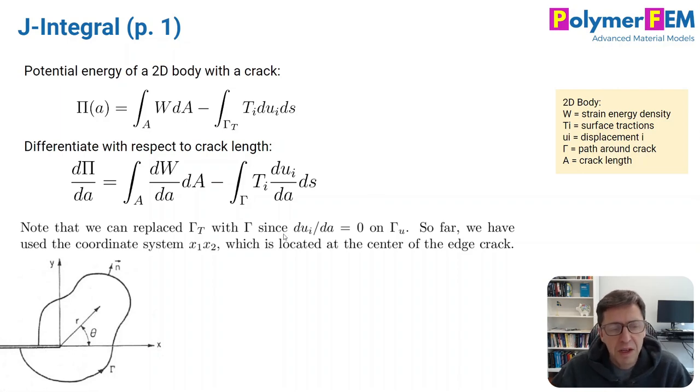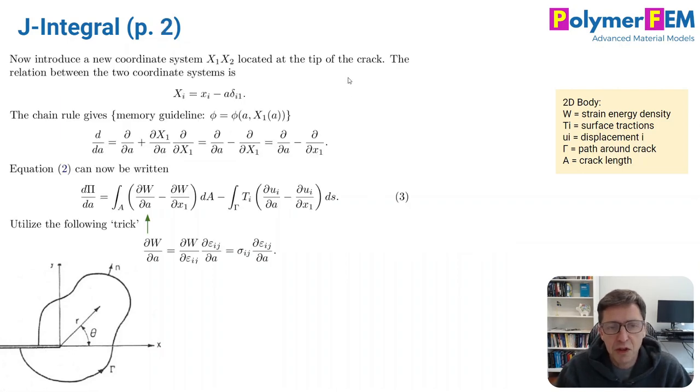Now we're going to talk about how we can simplify this equation and rewrite it a little bit. The first thing we'll do is that we will introduce a new coordinate system. Instead of having a coordinate system in the center of the body, we apply now a coordinate system that's located at the tip of the crack. And we introduce capital X and X1 and X2 for the local coordinate system at the crack tip.